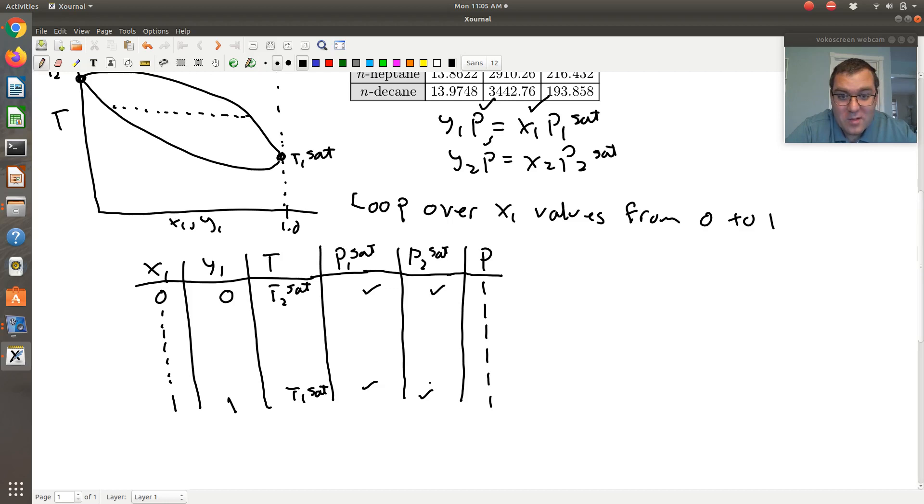So if you're doing this in MATLAB and you had a for loop to loop over X1 values, two equations with two unknowns, I could tackle that using fsolve. Or if I wanted to solve it sequentially, I could first solve for T and then solve for Y. How we would do that is using a bubble P calculation.